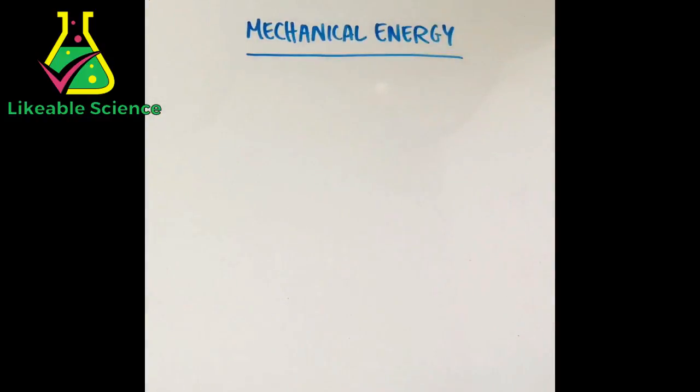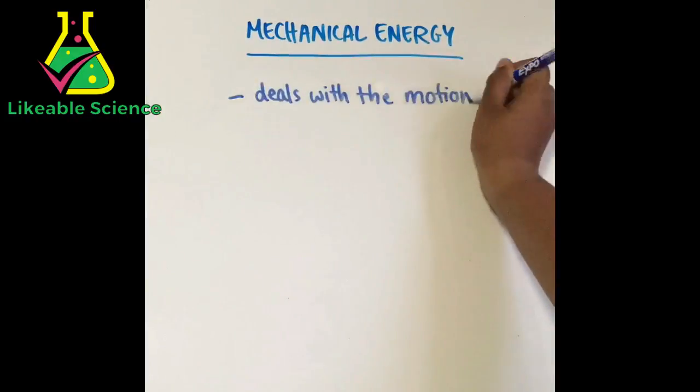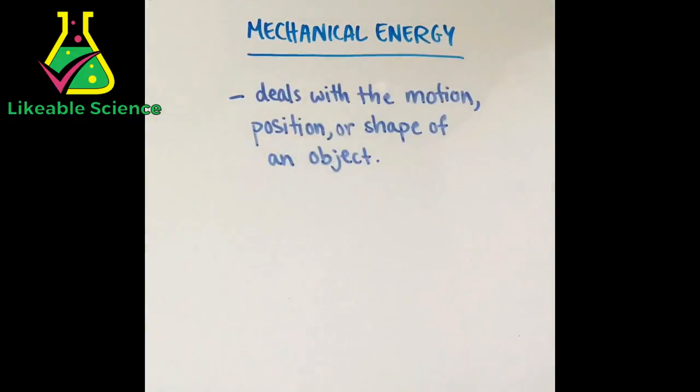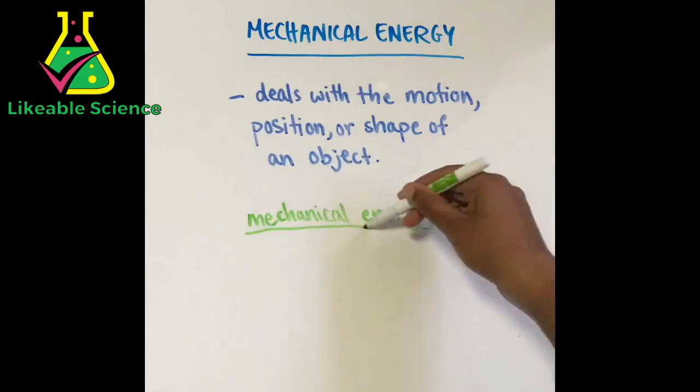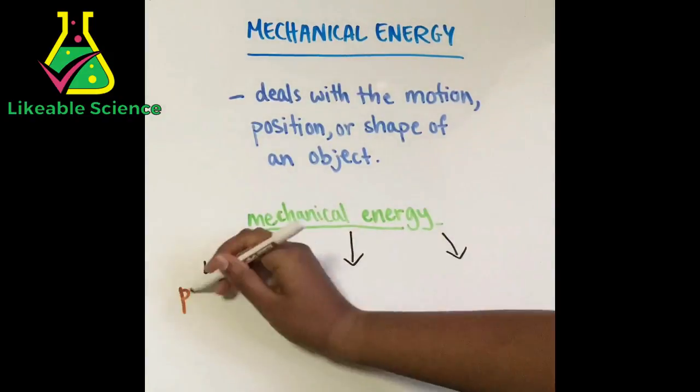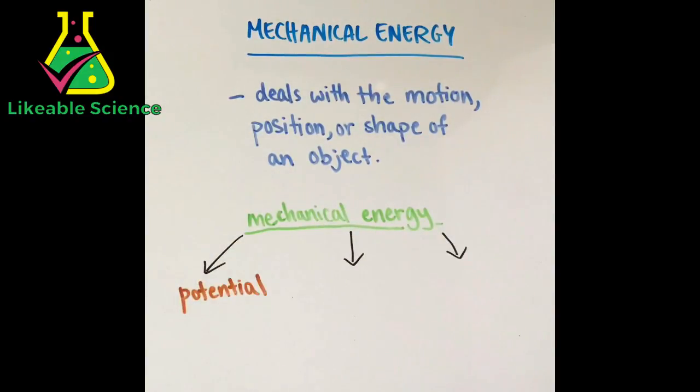Now let's get into the types of energy. First, let's talk about mechanical energy. It has to deal with the motion, position, or shape of an object. Mechanical energy can be either potential energy, kinetic energy, or both.